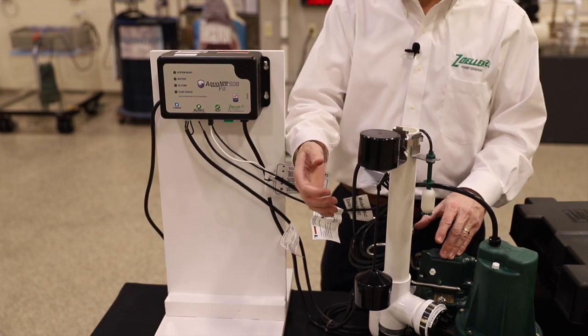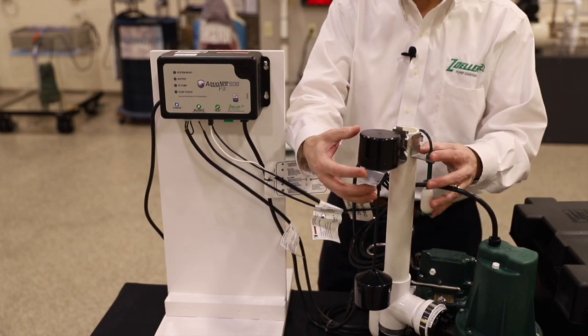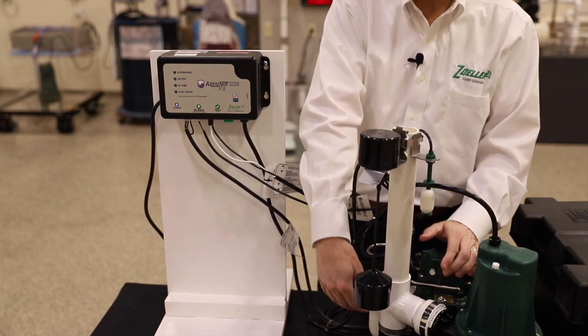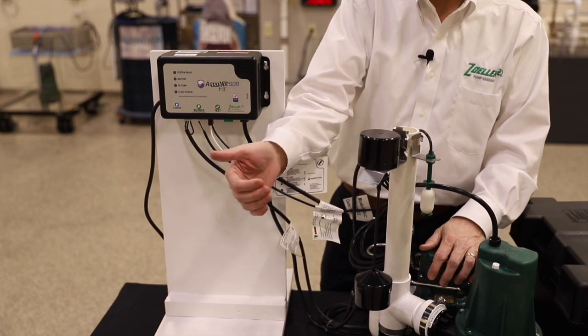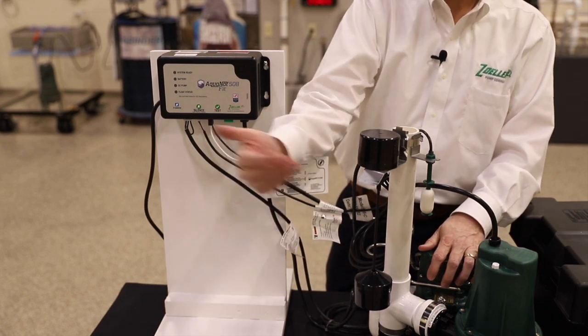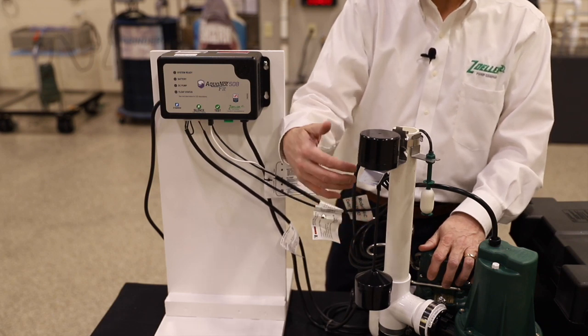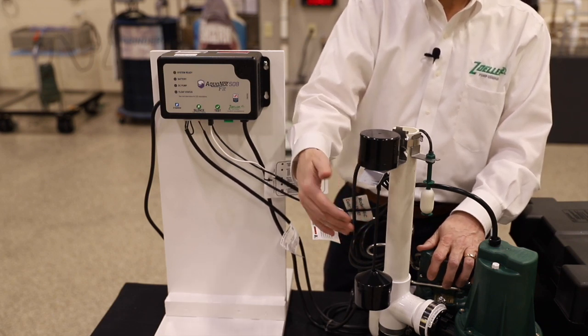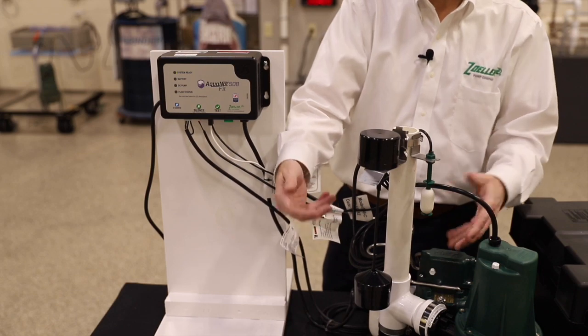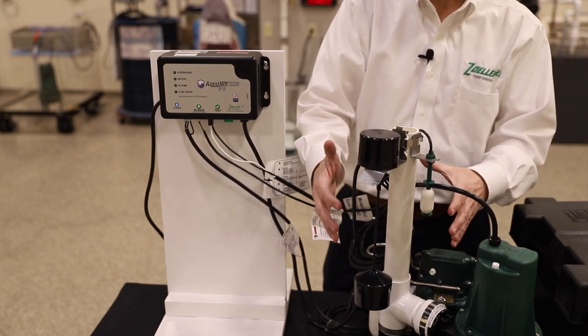One other thing is to make sure that all your switches, the floats on the switches especially, they are not in the way of where the incoming water is coming into the sump basin. You don't want those floats being obstructed by that water or where there's a lot of turbulence. That's not where you want your floats to sit.